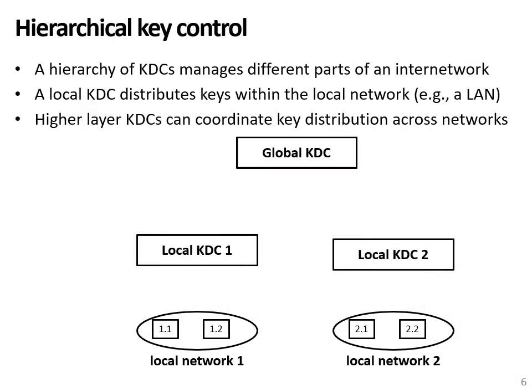Key distribution does not need to remain limited to a single entity. Instead, a hierarchy of key distribution centers can be created. This has several advantages because each local key distribution center is only responsible for a smaller network with fewer devices — this could be, for example, a local area network or a single building. Thus each key distribution center only needs to maintain a much smaller set of master keys. For coordination across different local networks, higher level key distribution centers in the hierarchy can be involved.